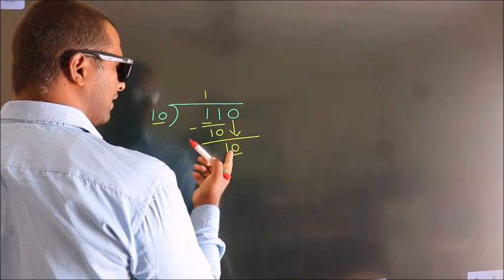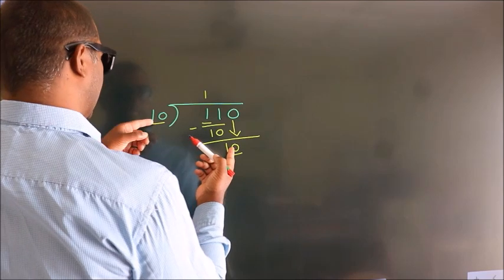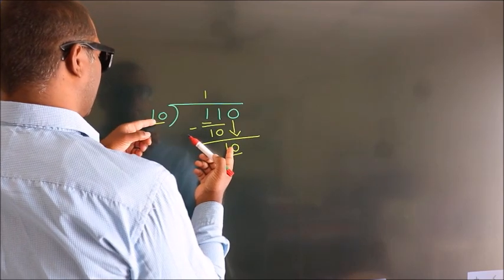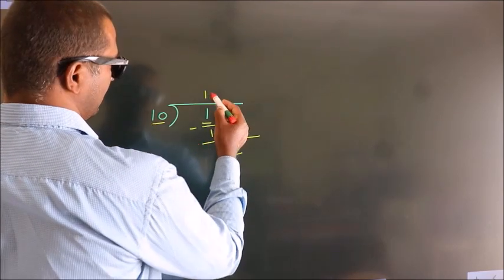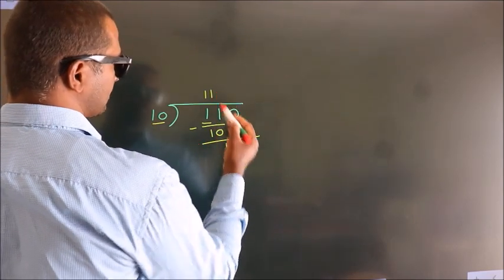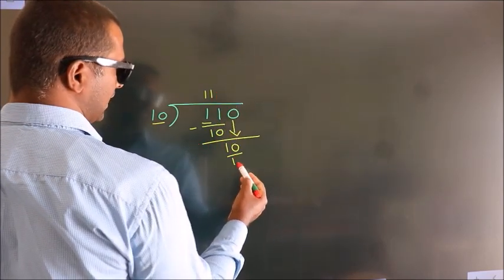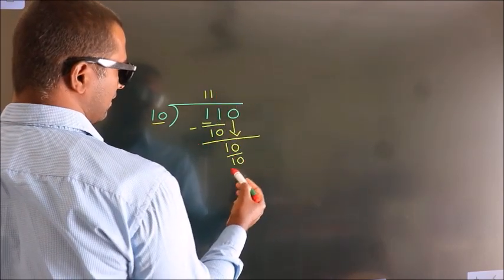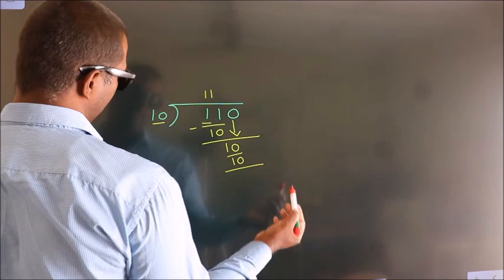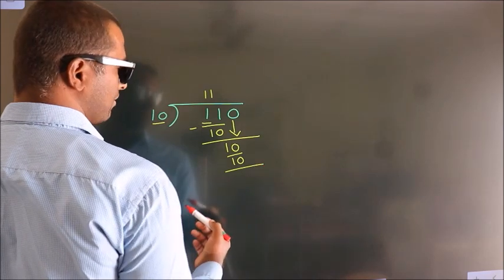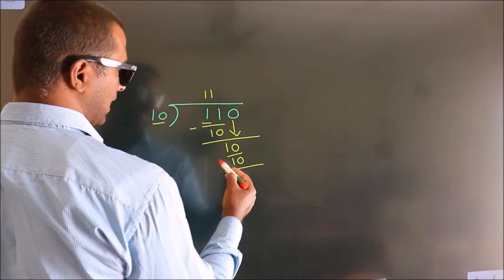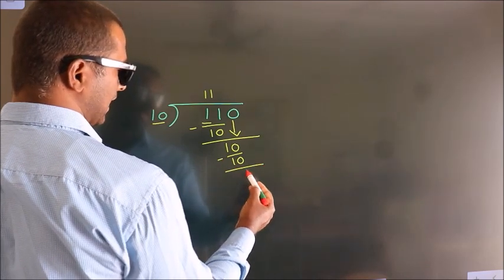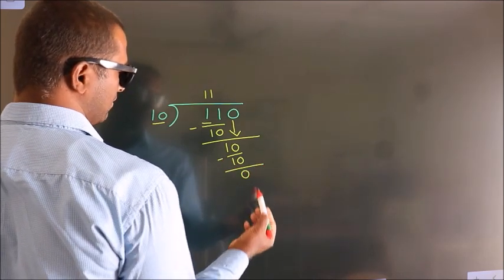When do we get 10? In the 10 table — 10 once 10. Now we subtract. We get 0.